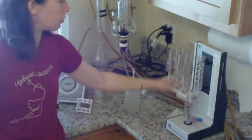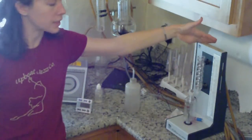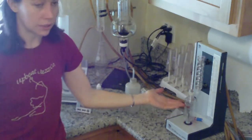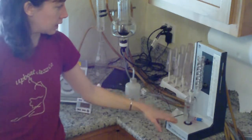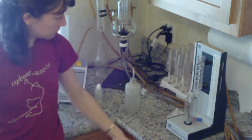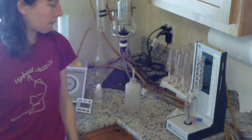So this is our ebulliometer or in layman's terms, this measures alcohol content. And this one's really easy. You just fill up a wine sample up to this one line, and you have to make sure to calibrate with boiling distilled water before you add the wine sample, which should have zero alcohol.